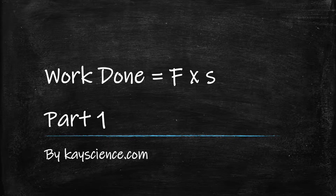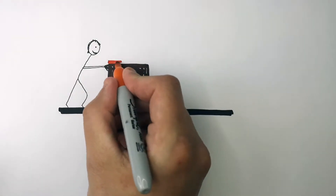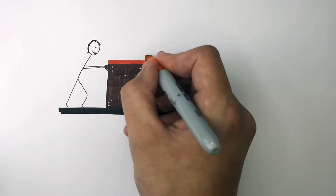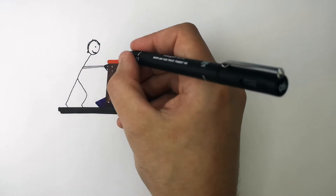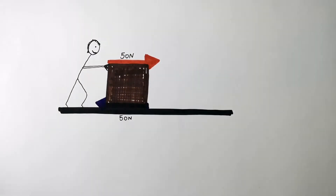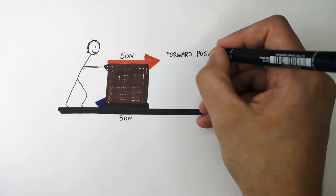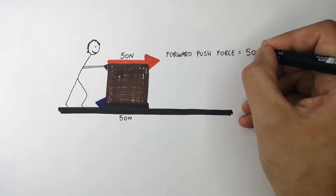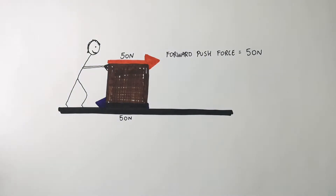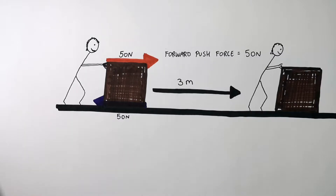Introducing work done equals force times distance by KScience.com. So this box requires moving. Someone is going to come along and apply a push force of 50 newtons to the box. The push force is 50 newtons going forwards, and they move this box 3 meters. So work will have been done to move this box 3 meters with a force of 50 newtons.